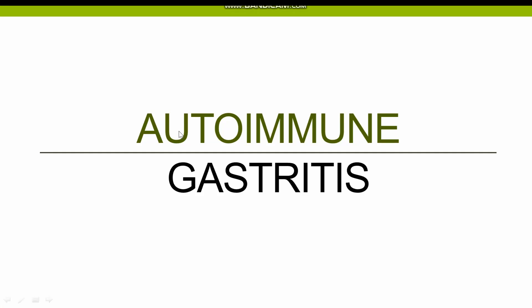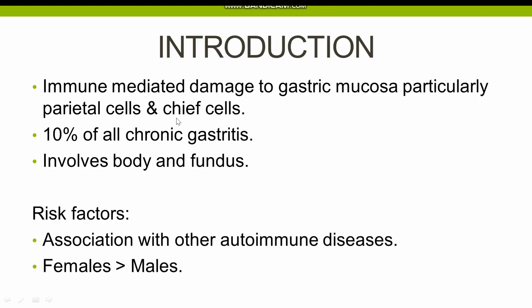The next topic of our discussion is autoimmune gastritis. Autoimmune gastritis, as the name shows, is an autoimmune reaction against the gastric mucosa. It is an immune-mediated damage to gastric mucosal cells, particularly parietal cells and chief cells. The parietal cells secrete intrinsic factor, whereas the chief cells secrete hydrochloric acid.